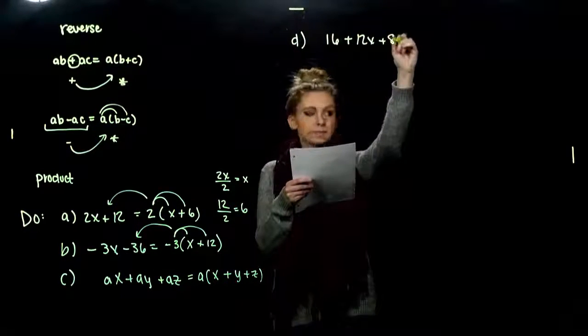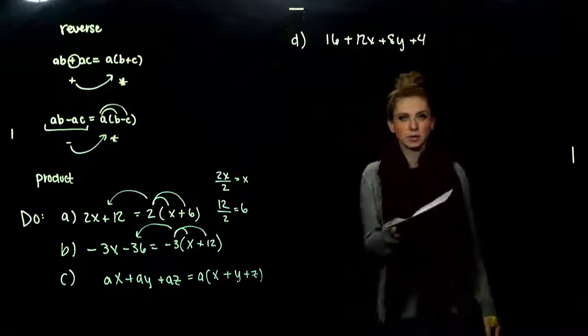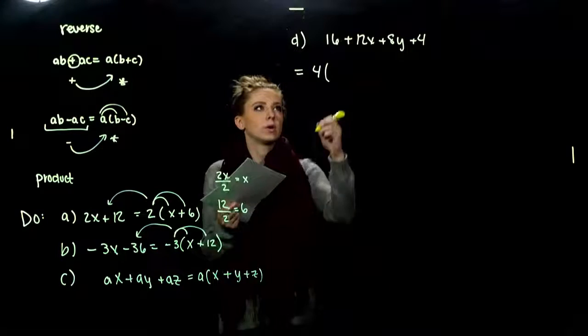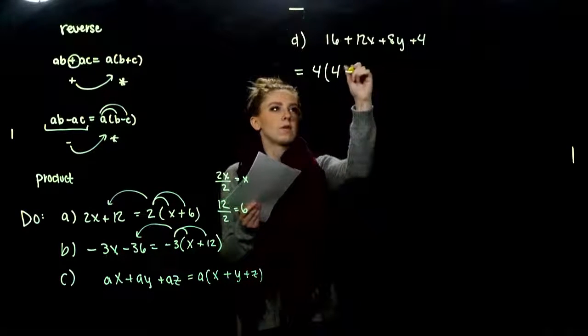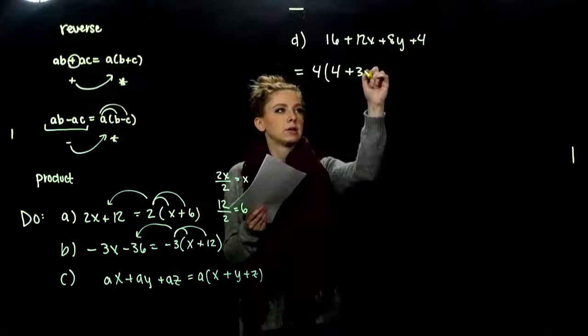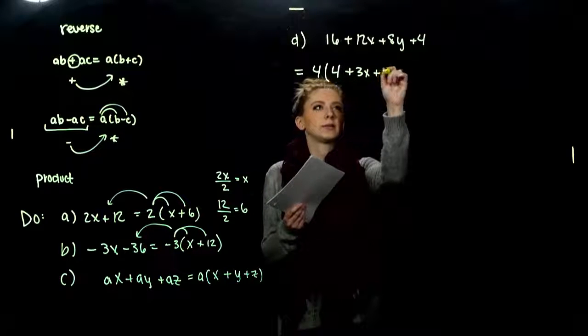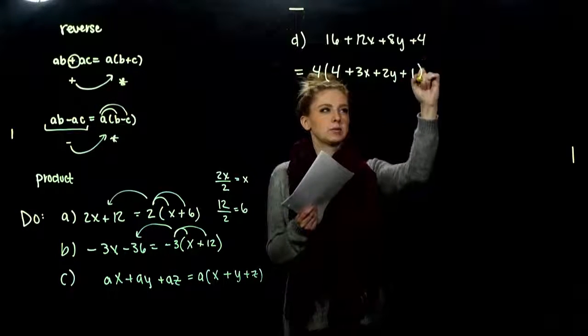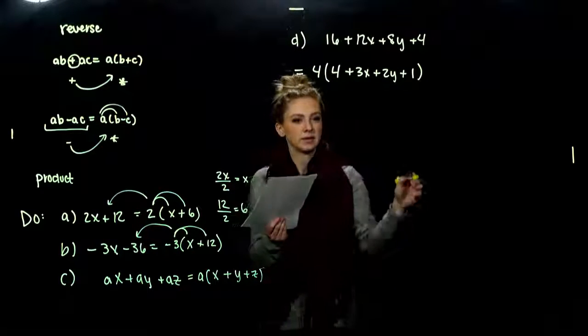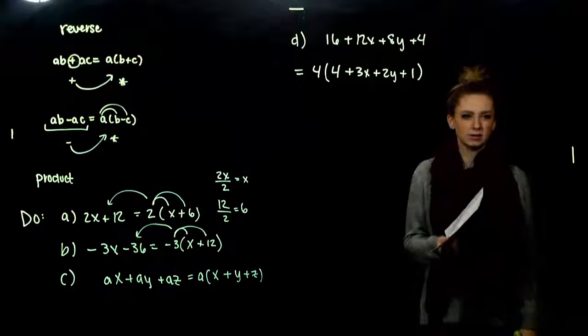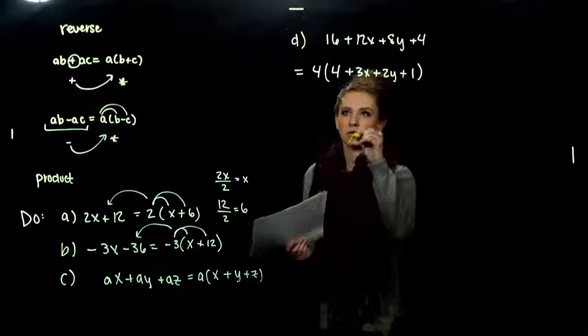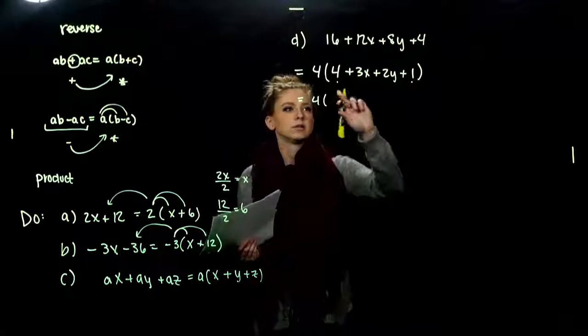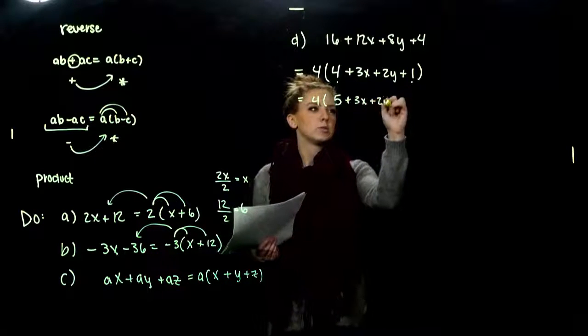For c, now we're looking between three different terms, and they're generic. They're arbitrary. We don't have specific values for a, x, y, or z. Again, we want to ask, is there anything in common that we can take out of all of them? Factor of a, and if we do that, what are we left with again? I have an x, and a y, and a z. And again, we could check, distribute it back in. Do I get back to my original expression that I started with? Yeah.